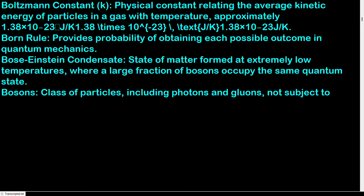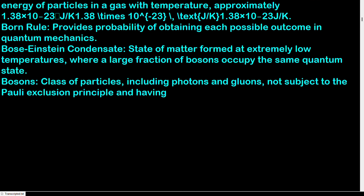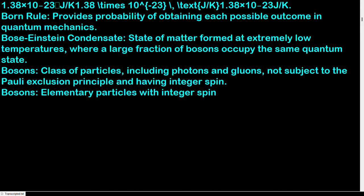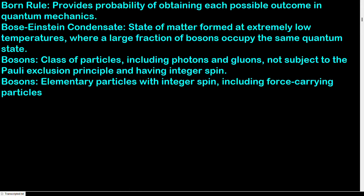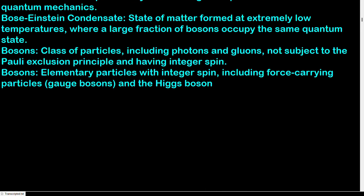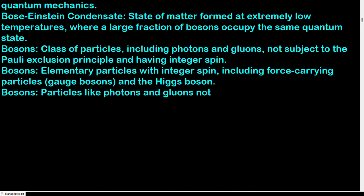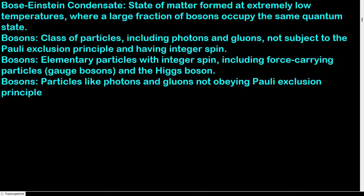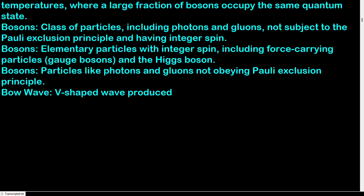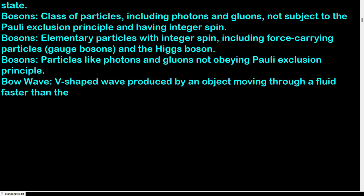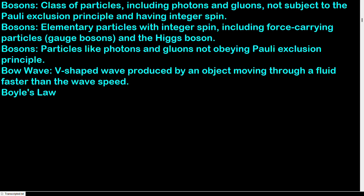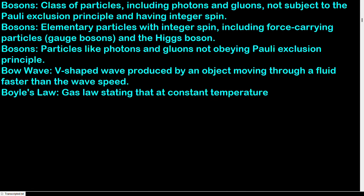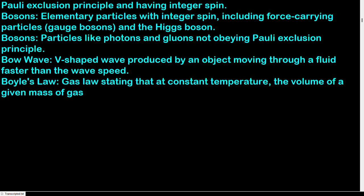Bosons: class of particles including photons and gluons, not subject to the Pauli exclusion principle, having integer spin — including force-carrying gauge bosons and the Higgs boson. Bow wave: V-shaped wave produced by an object moving through a fluid faster than the wave speed. Boyle's law: at constant temperature, the volume of a given mass of gas is inversely proportional to its pressure; P₁V₁ = P₂V₂.